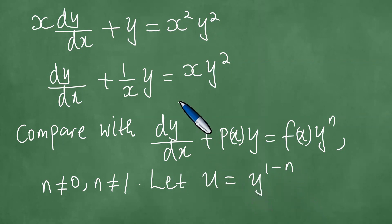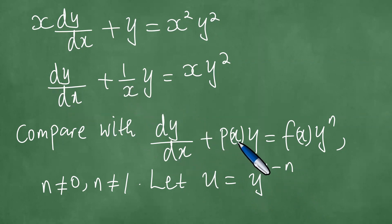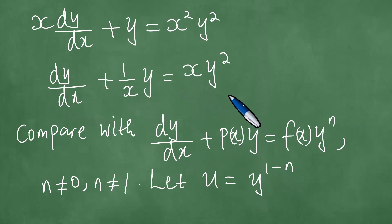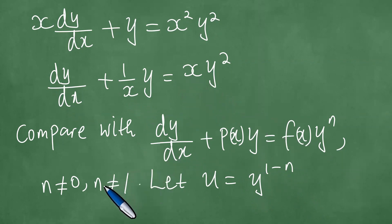After we transform and compare, we can see that p(x) becomes 1 over x, and f(x) is x. The term y to the power n is exactly y squared, meaning n equals 2. At this point, we proceed to solve this differential equation in detail.